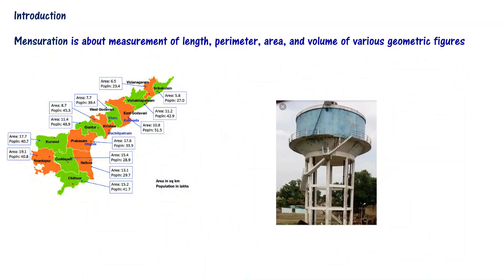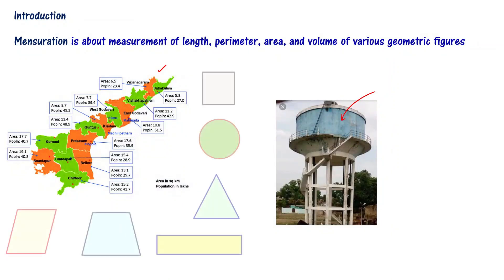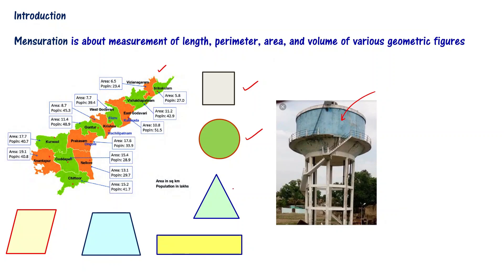In this chapter, we are not going to discuss how to measure the area of a district or the volume of an overhead tank. But we are going to learn the basic concepts related to these aspects. For example, we are going to learn about square — how to measure its perimeter and area — circle, triangle, rectangle, and trapezium.